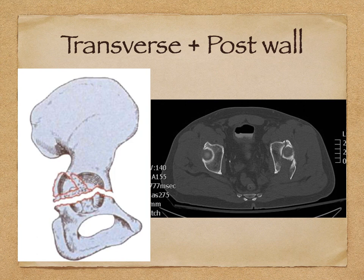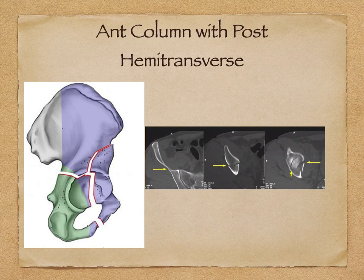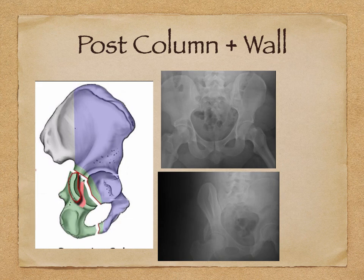A combination of transverse and posterior wall shows two types of fracture lines. The T-type shows both horizontal and vertical fracture lines. Anterior column with posterior hemi-transverse shows two types of fracture lines in different areas. Posterior column with wall is not very difficult to identify on reconstruction.